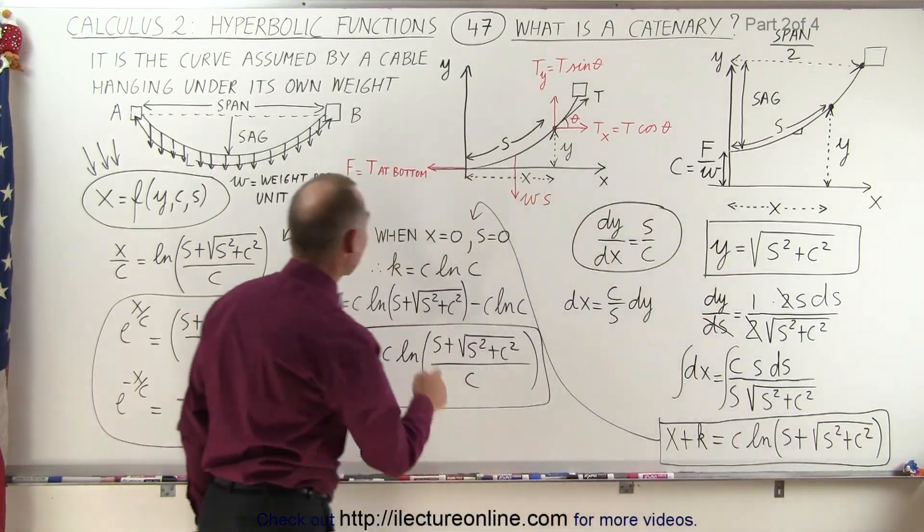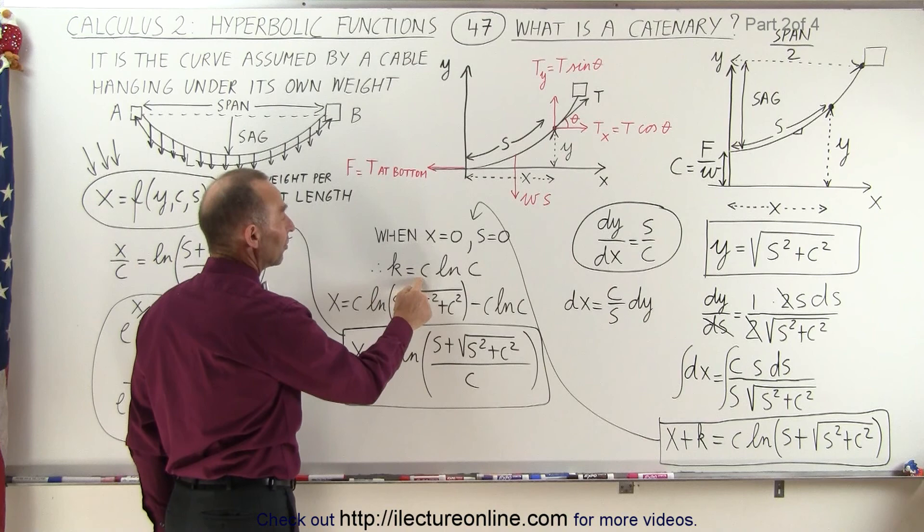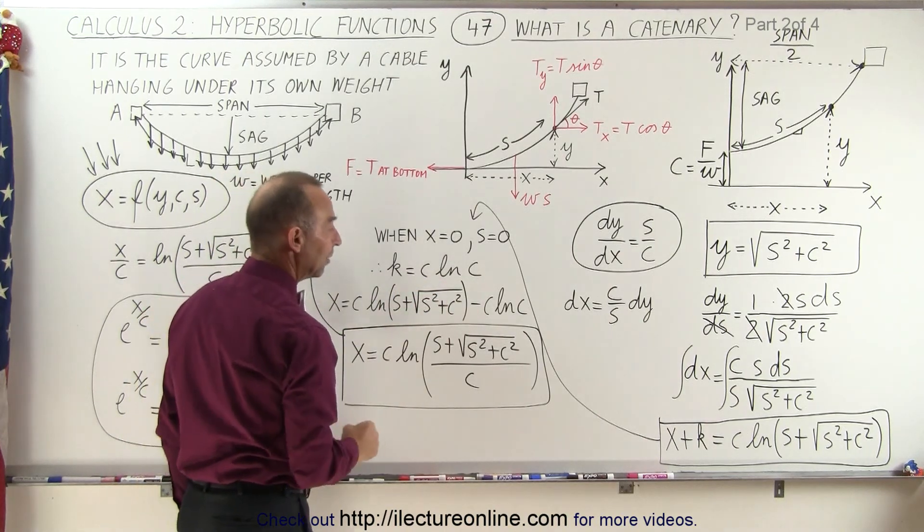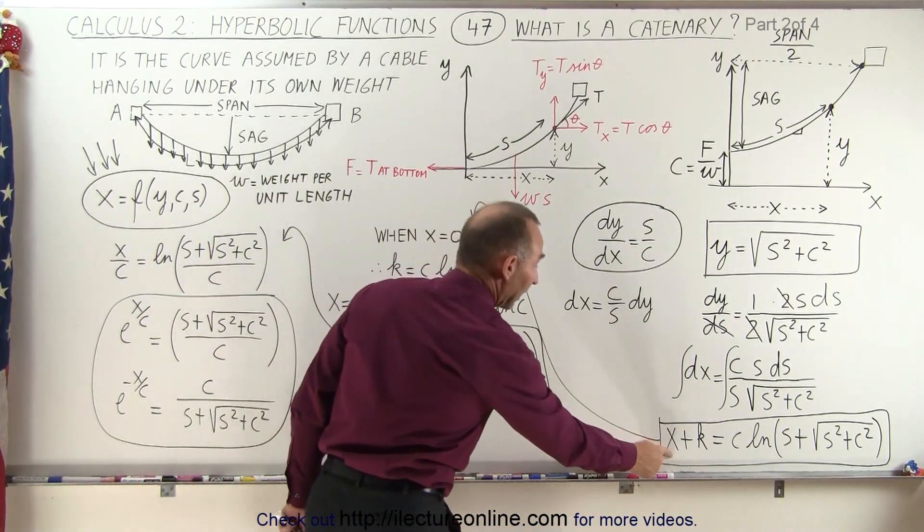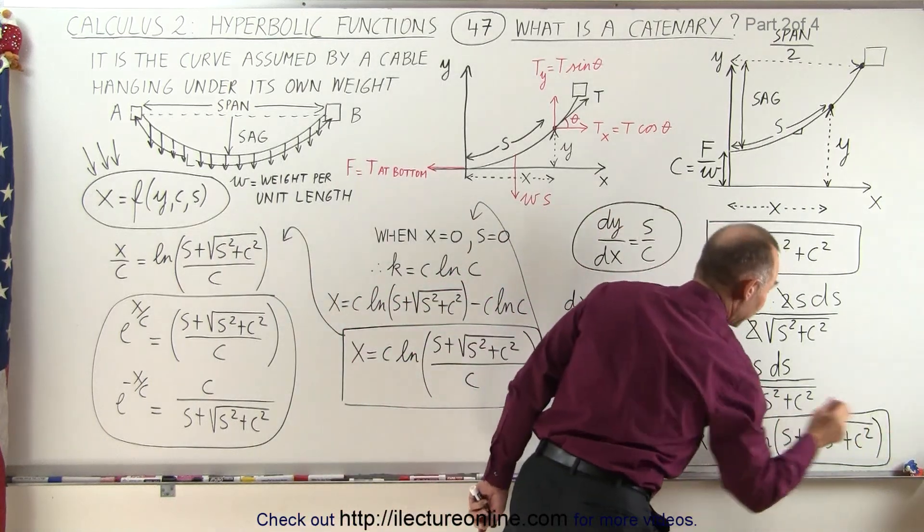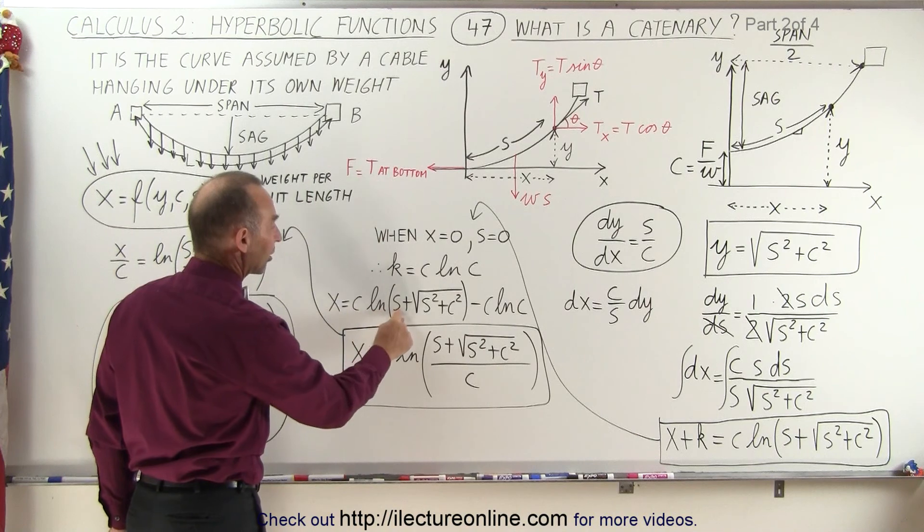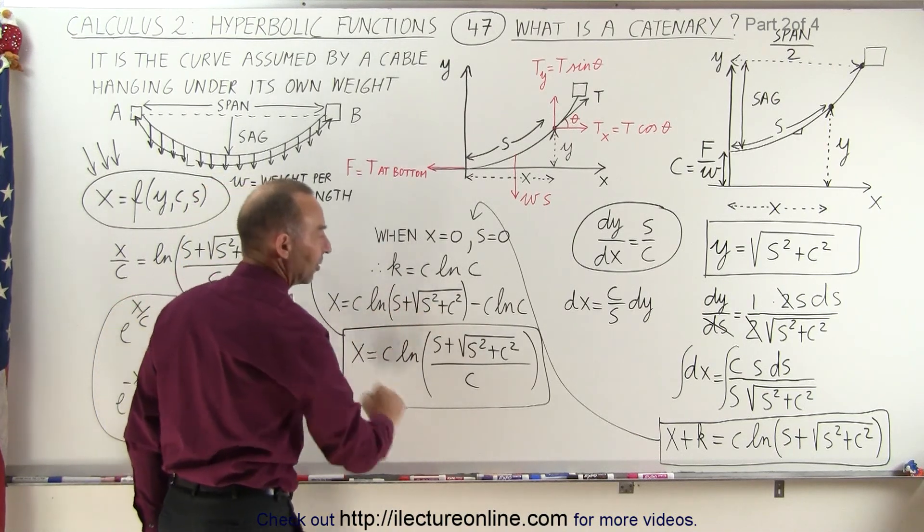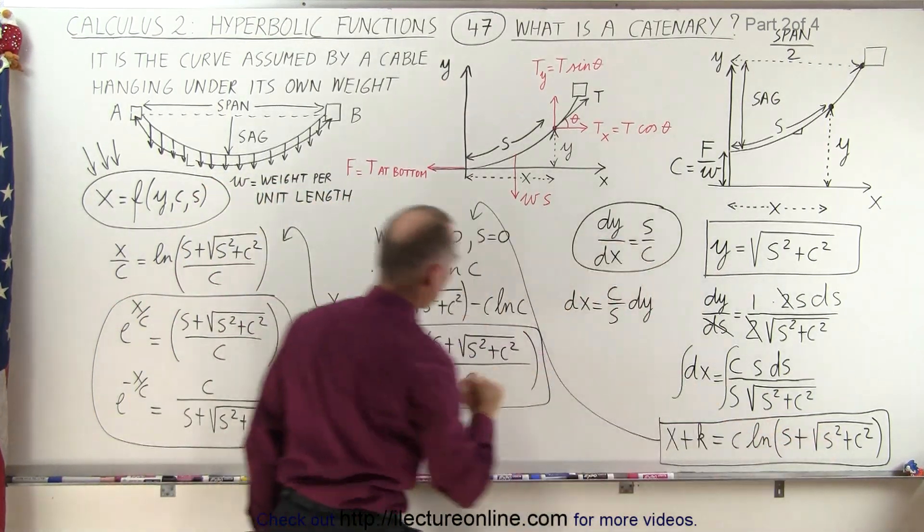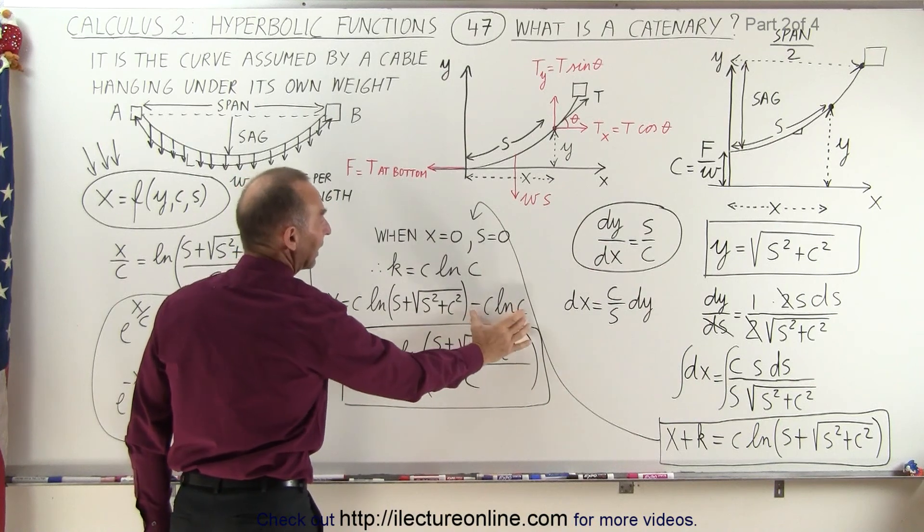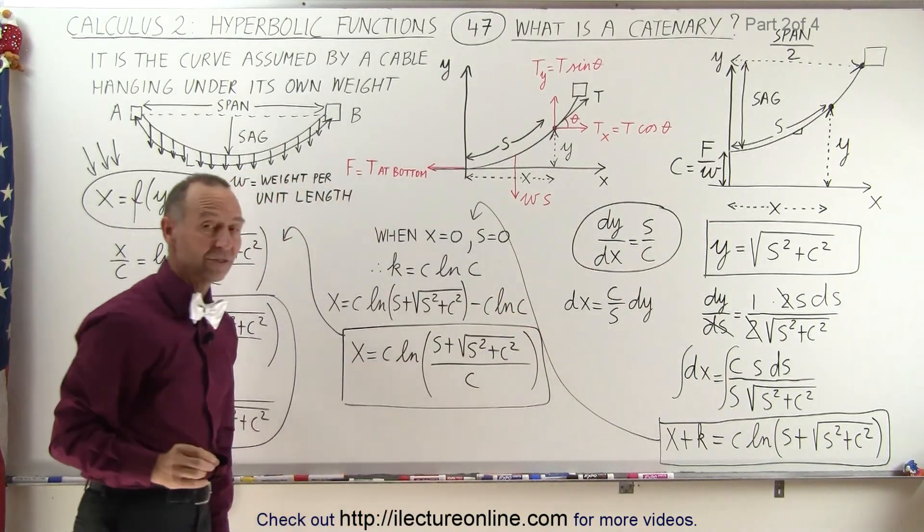So we can then say that k, the constant, is equal to c times the natural log of c. And then, if we then solve this equation for x by moving k to the other side, we now have x is equal to c times the natural log of s plus the square root of s squared plus c squared, that's this quantity right here, minus k, and k now becomes c times the natural log of c.